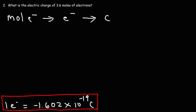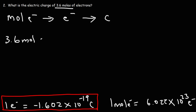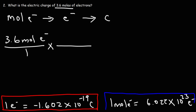Another conversion factor we need is Avogadro's number: 1 mole is equal to 6.022 times 10 to the 23. So if you have 1 mole of atoms, that's 6.022 times 10 to the 23 atoms. Similarly, 1 mole of electrons is that number of electrons. Starting with 3.6 moles of electrons, we convert to number of electrons using Avogadro's number by putting moles of electrons on the bottom to cancel those units.